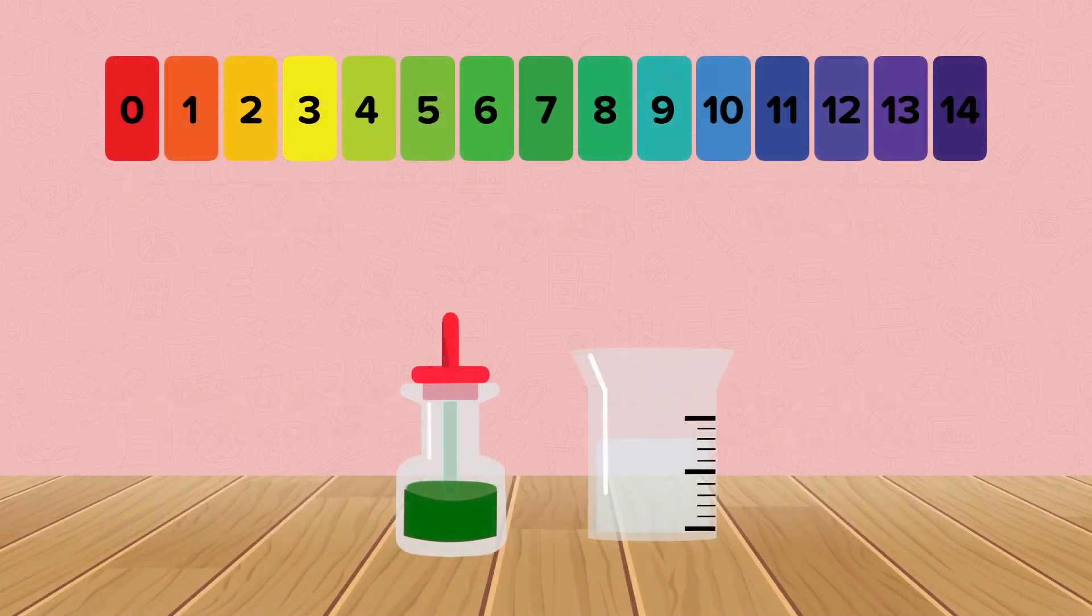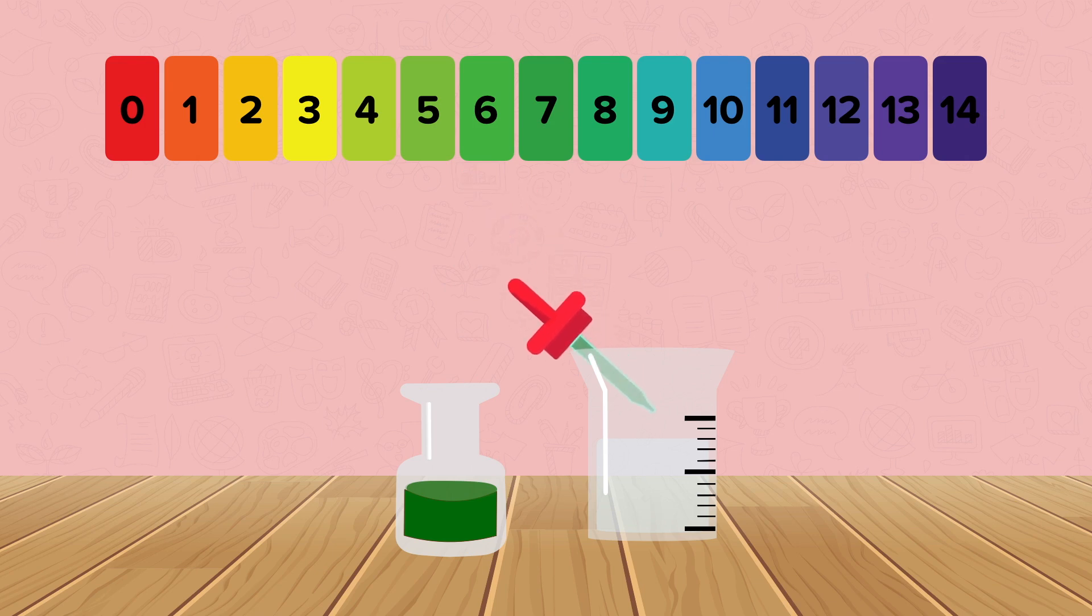The universal indicator color chart corresponds with pH numbers so it can help us to estimate the pH of a solution. A few drops are added to the solution and the color is matched with the color chart which indicates the approximate pH.